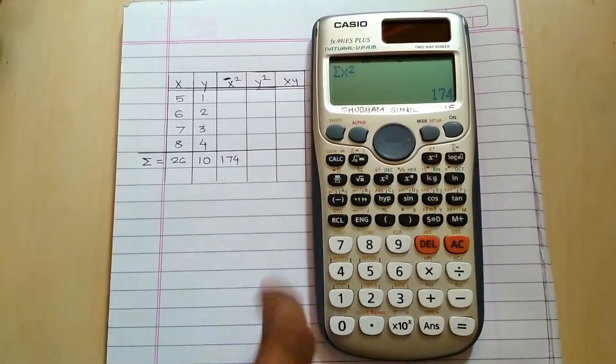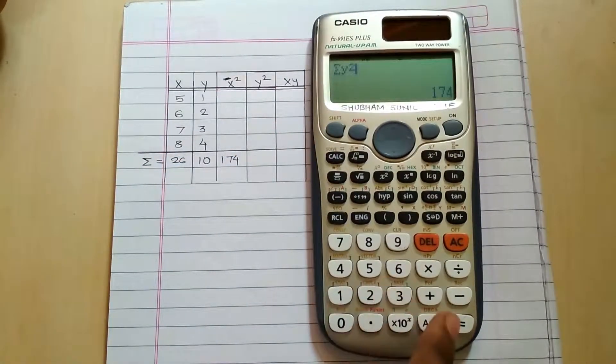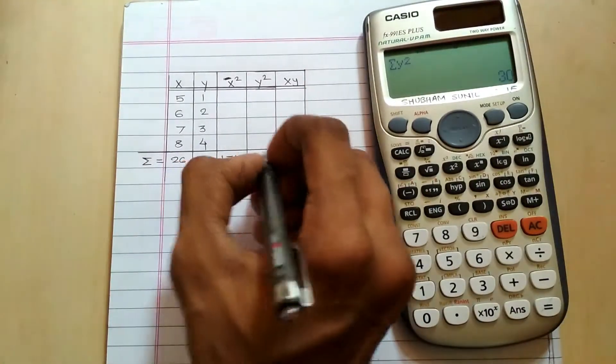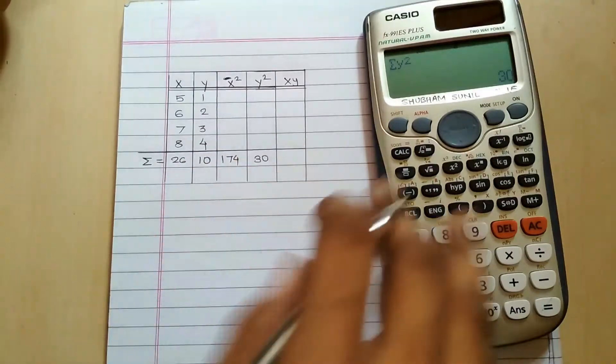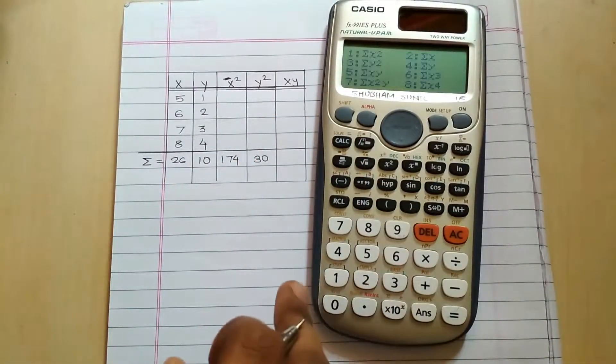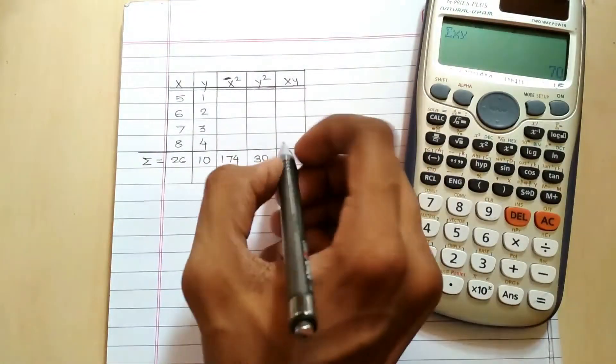So without calculating I got it directly. Shift 1 3, summation of y square is 30. Similarly I will find summation of x square, shift 1 3 5, equal to 70. So this was an easy trick.